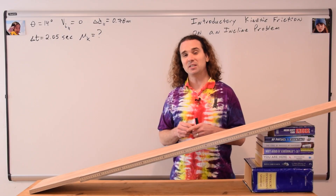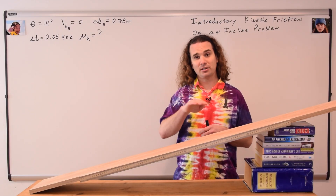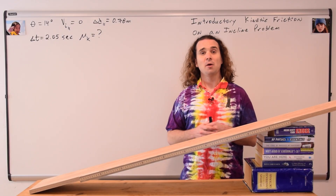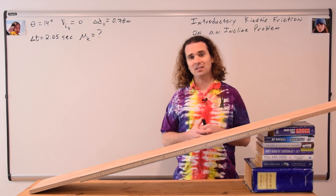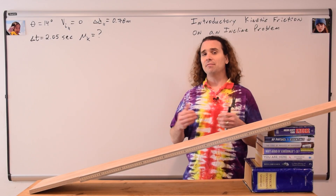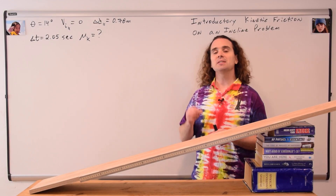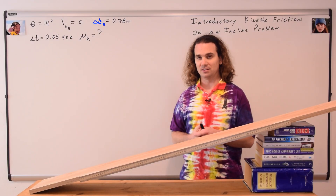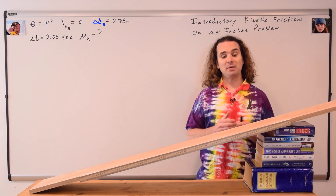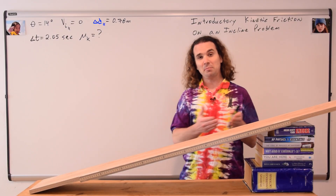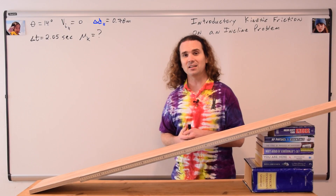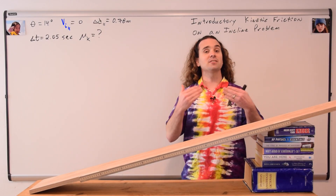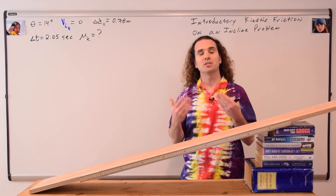Because the displacement is neither directly in the x-direction nor the y-direction, but rather parallel to the incline, I have labeled the displacement delta-d parallel for the displacement parallel to the incline. Because the book is moving parallel to the incline, I have labeled the initial velocity the initial velocity parallel, which is equal to 0.